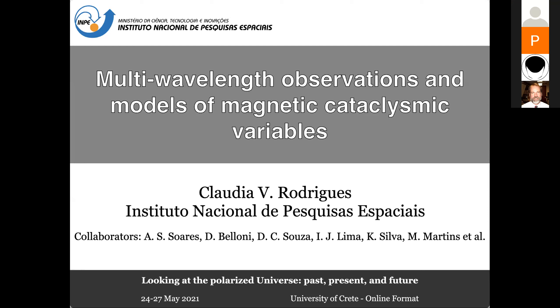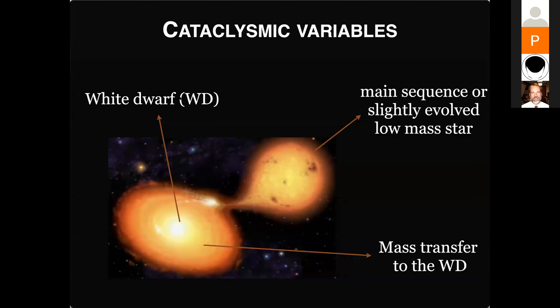The first thing I would like to talk to you about is what is a cataclysmic variable. In some senses, it's very similar to X-ray binaries, but you have to change the neutron star or the black hole by a white dwarf.